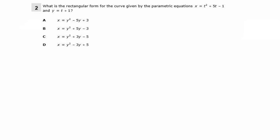Next, what is the rectangular form for the curve given by the parametric equations x equals t squared plus 5t minus 1 and y equals t plus 1?